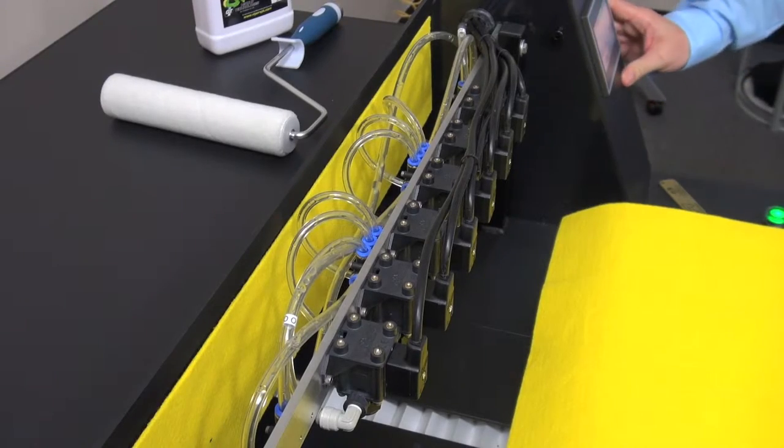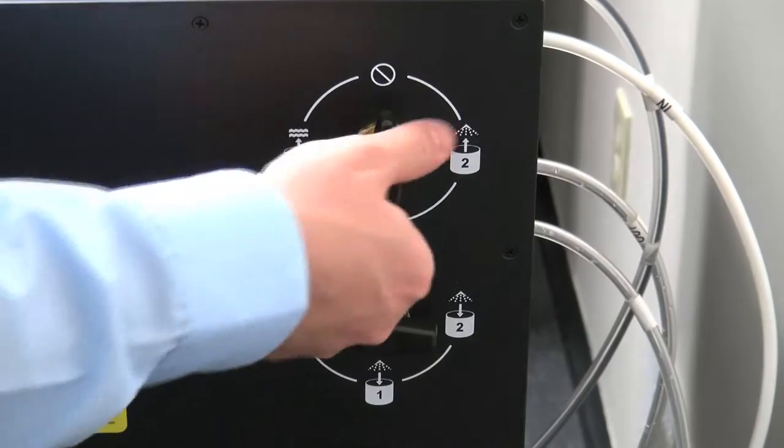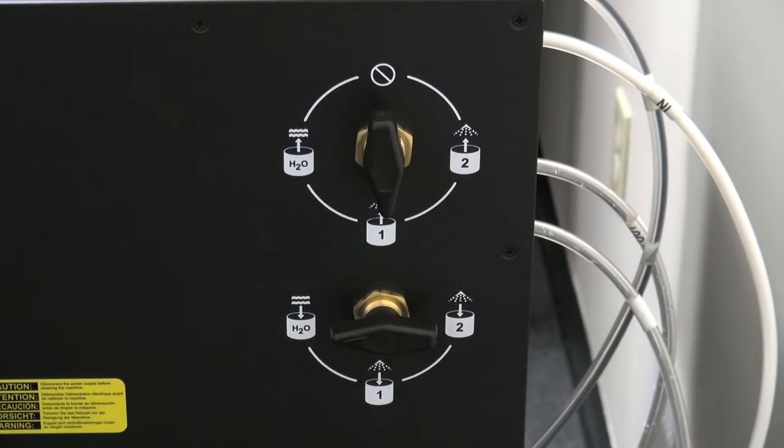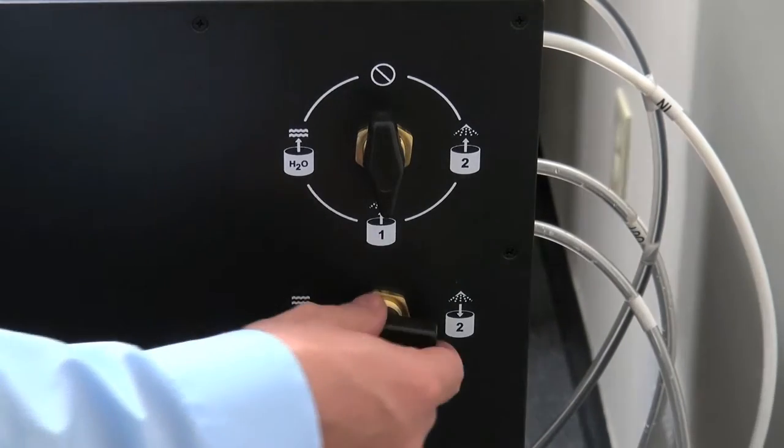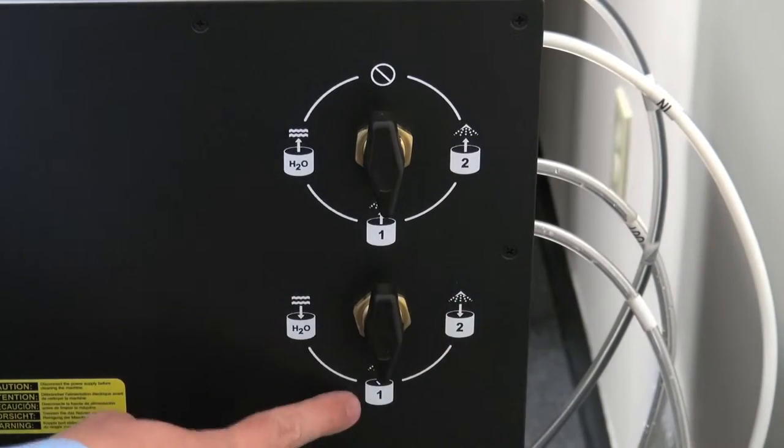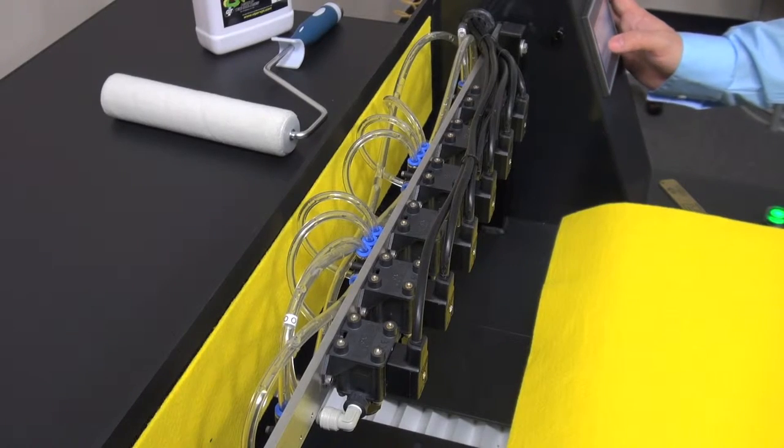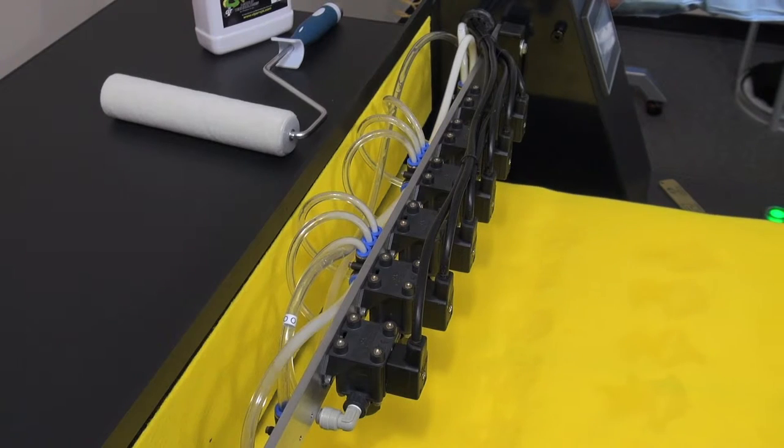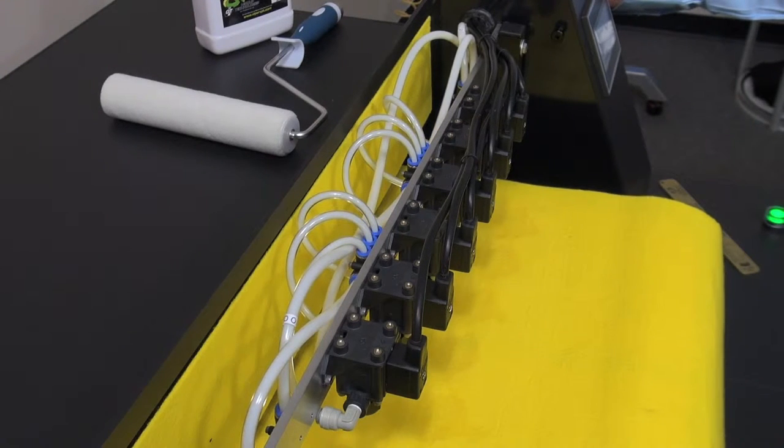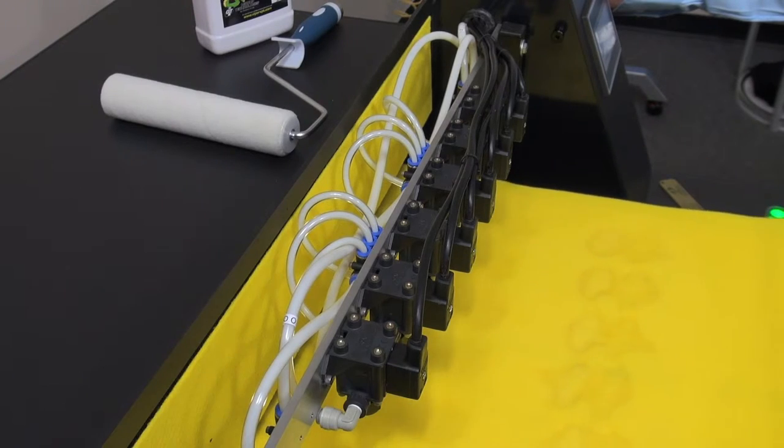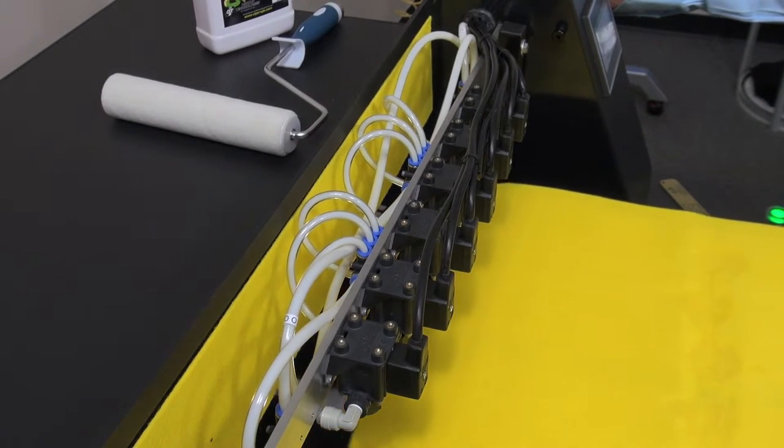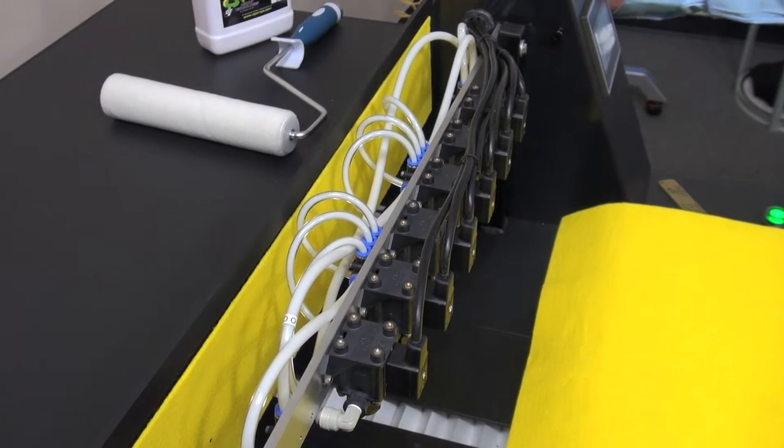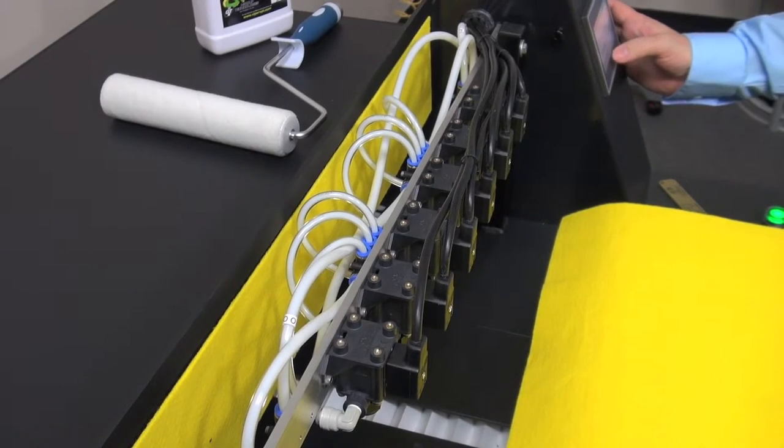Change the fluid in valve to the pre-treatment fluid selected. Change the fluid out valve to the same fluid container. Press the start button. This will fill the system with pre-treatment fluid. When the pump is finished, press the finish button.